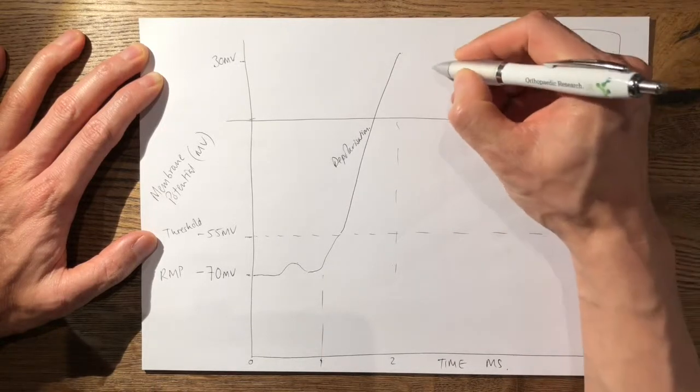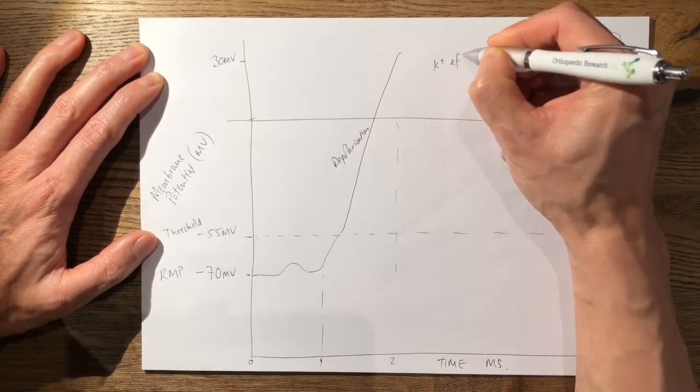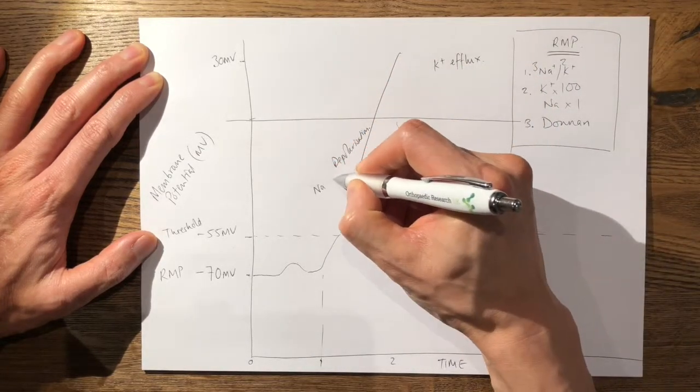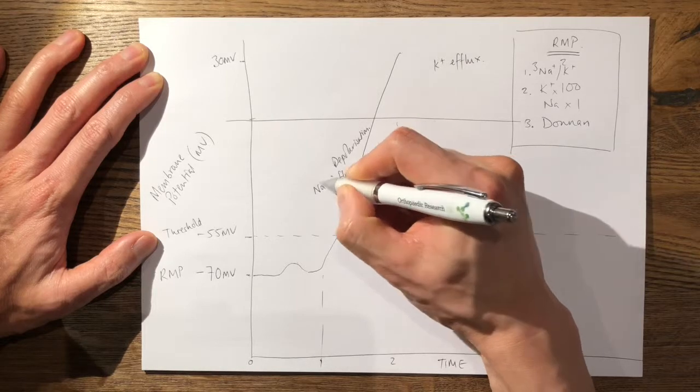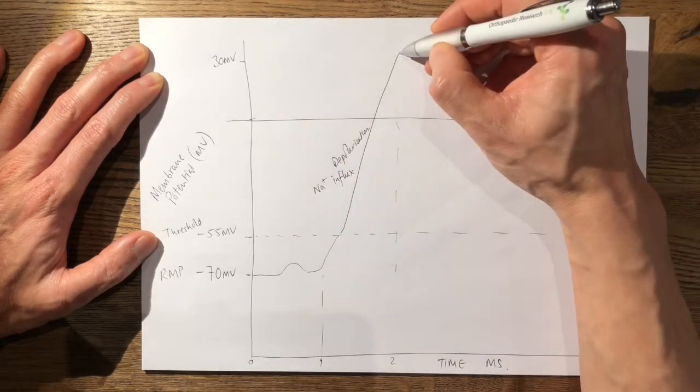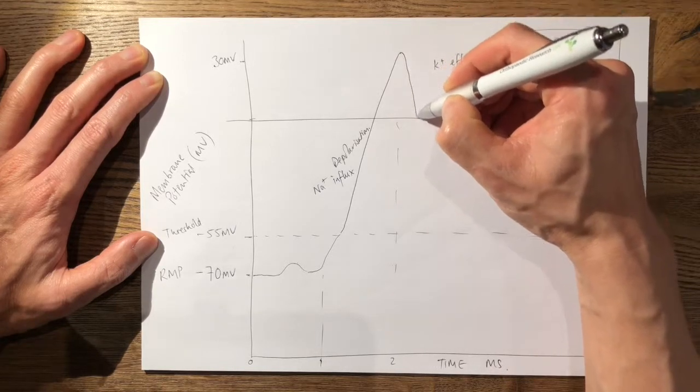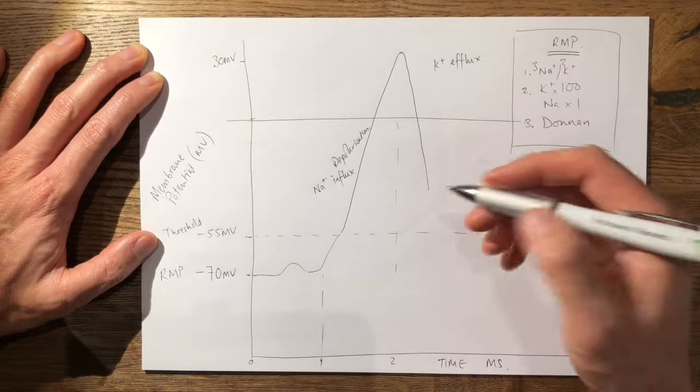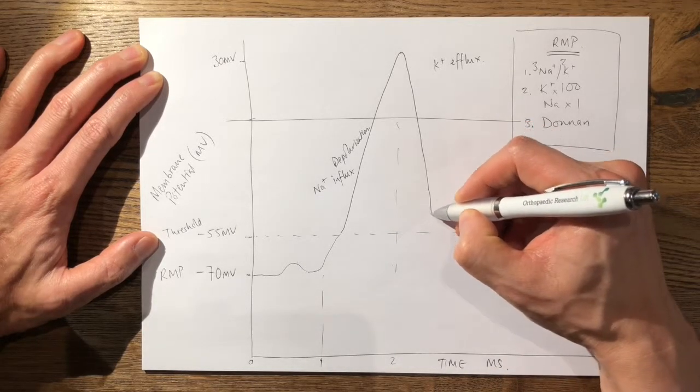When you have, so this is potassium efflux, and we know here that's sodium influx. So when you have potassium efflux, you get a very rapid repolarization of the membrane potential.